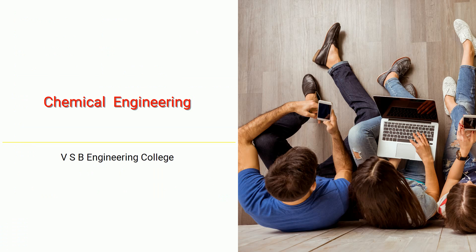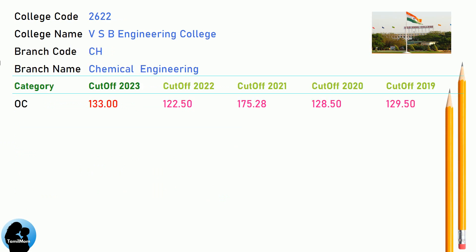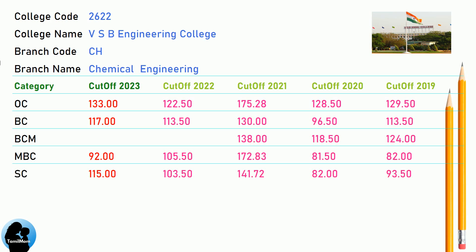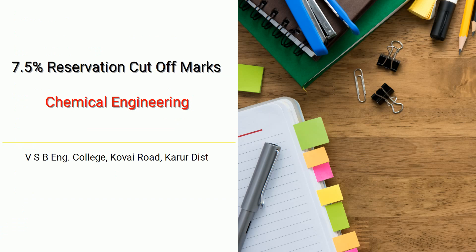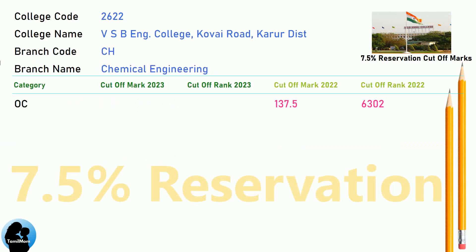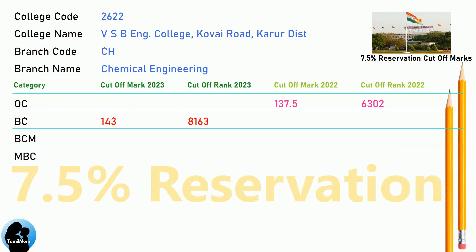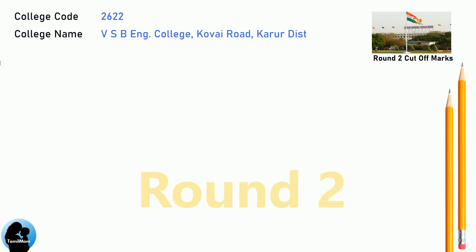DNA Cut-Off for VSB Engineering College in Chemical Engineering. DNA 7.5 Reservation Cut-Off for VSB Engineering College in Chemical Engineering. DNA Round 2 Cut-Off for VSB Engineering College in Chemical Engineering.